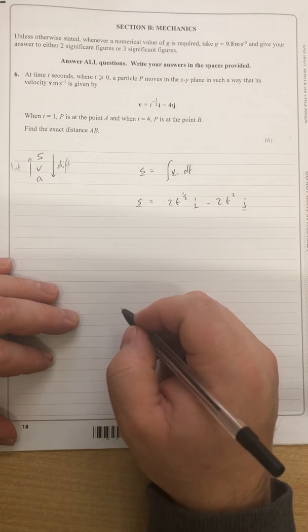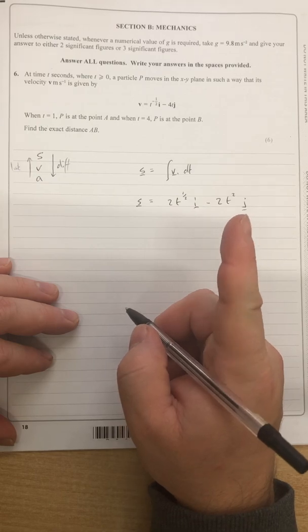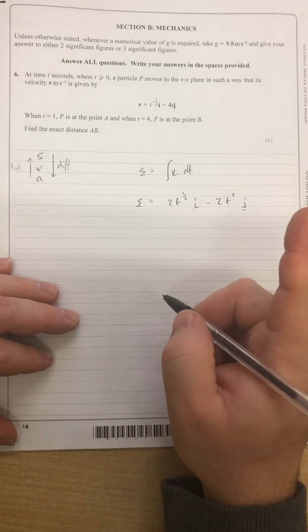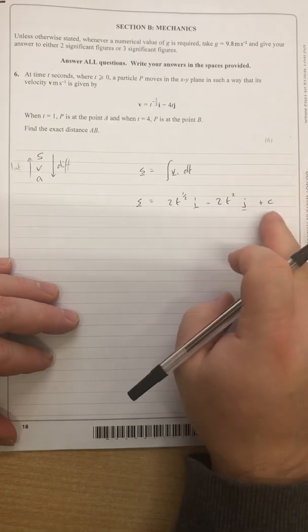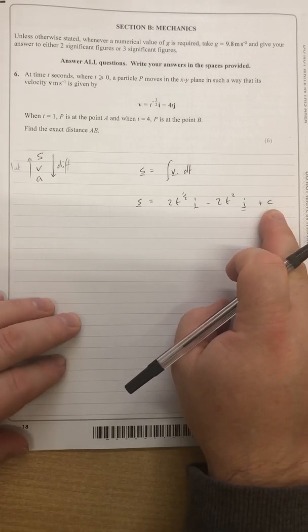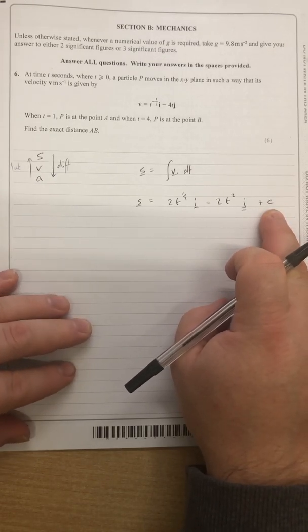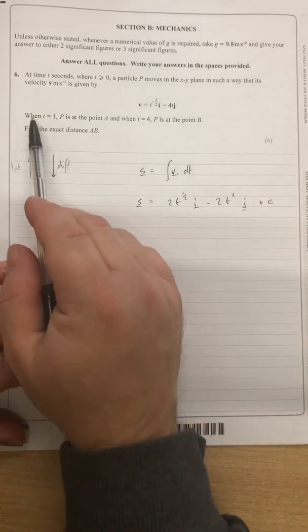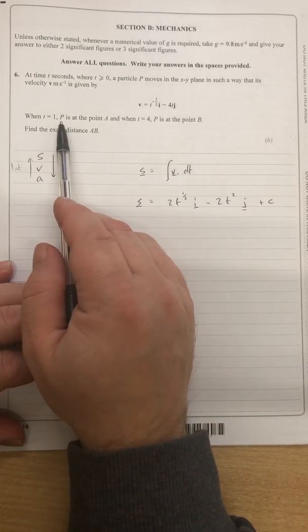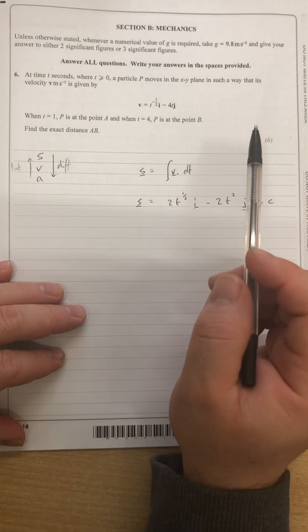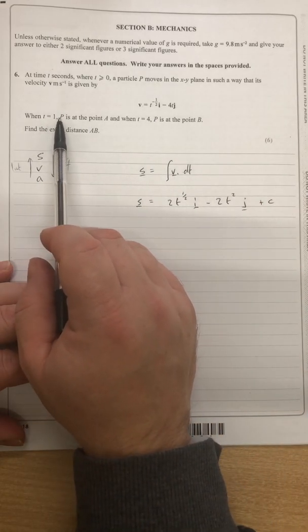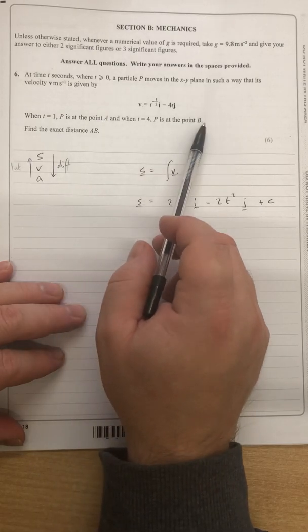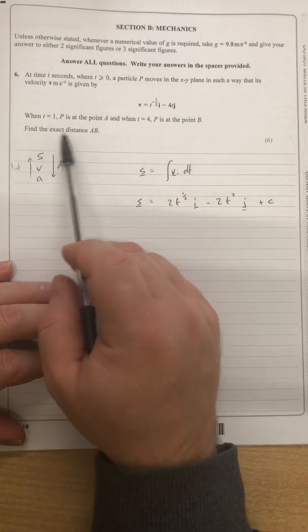Now crucially we didn't have limits with this integration, so it's indefinite, which means we have to remember there should be a plus c on the end because there might have been a constant term there. How are we going to determine if there is? Well you'll have some fixed points, and here they are in this question, a couple of fixed points. So I know when t equals one, p is at the point a, and t equals four, p is at the point b, and I want the distance between them.